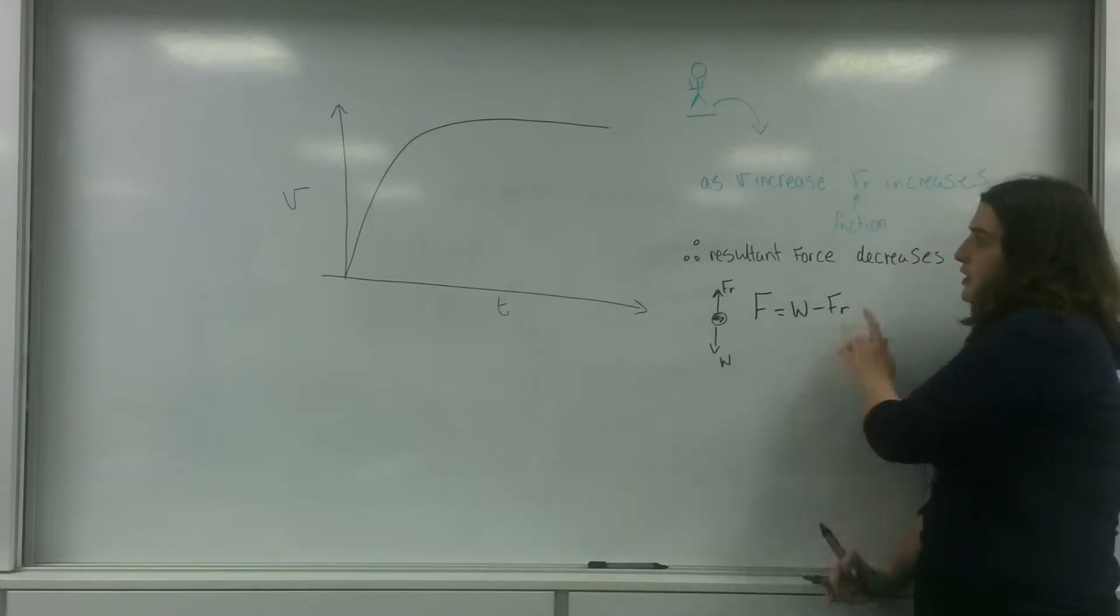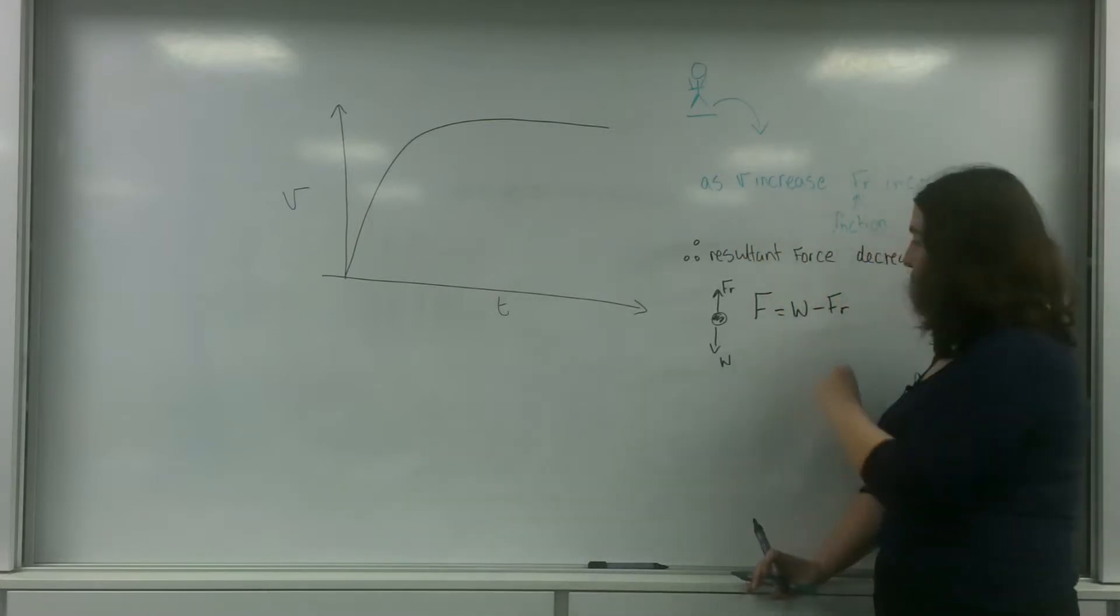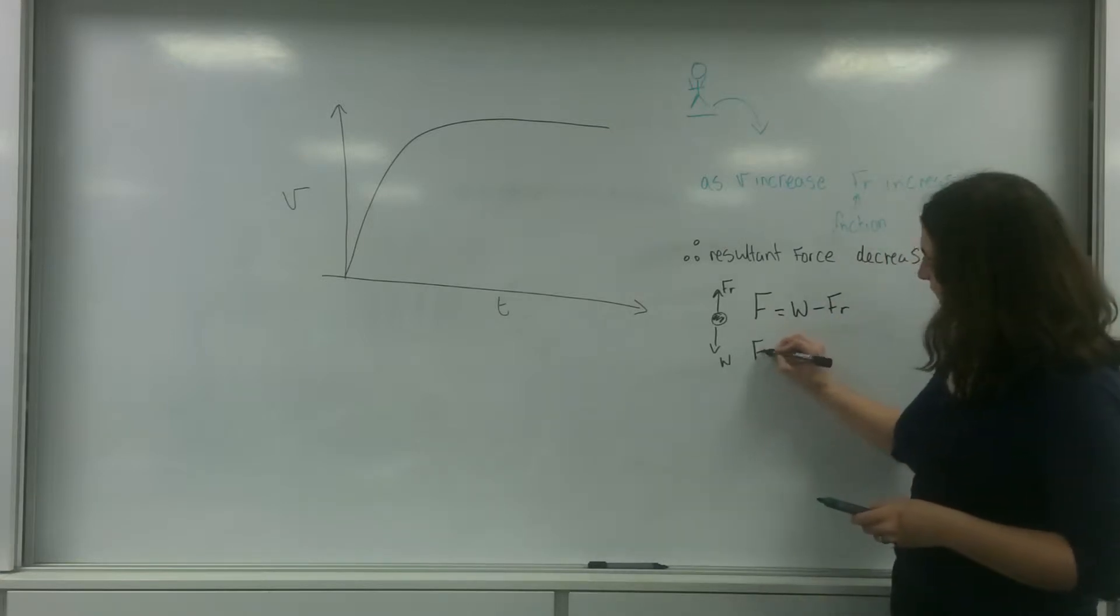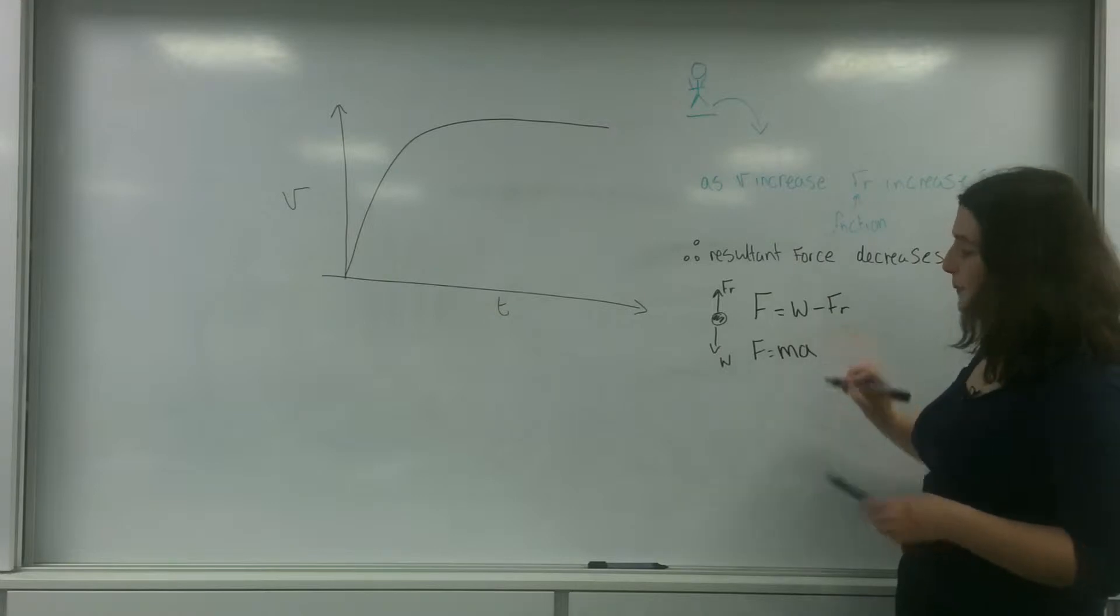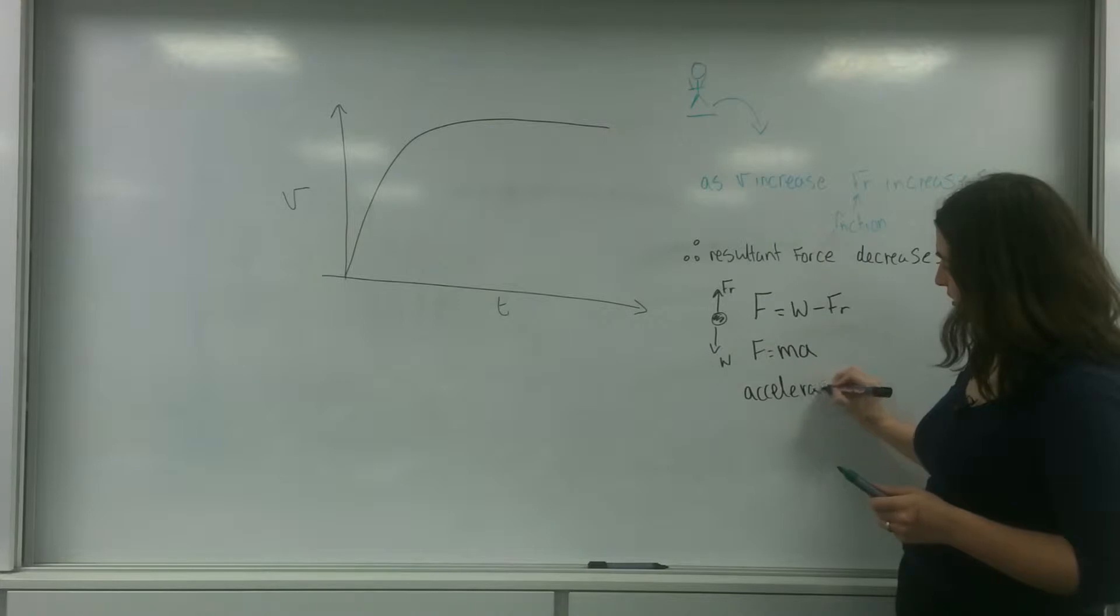So as the friction goes, because he gets faster, the friction goes up because he's hitting more particles, my resultant force goes down. So this means using F equals MA, my acceleration also decreases.